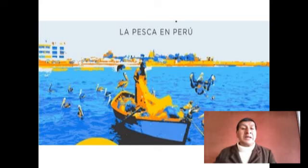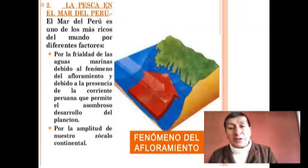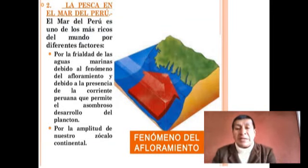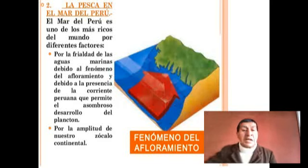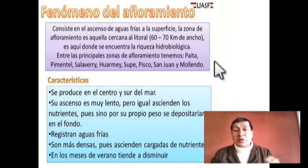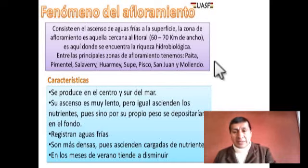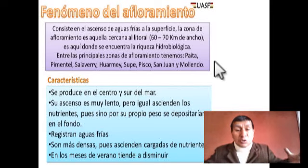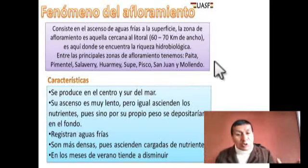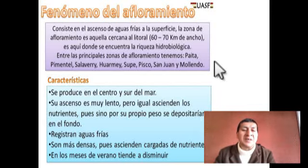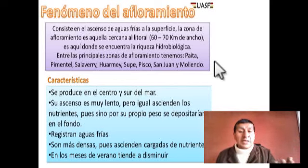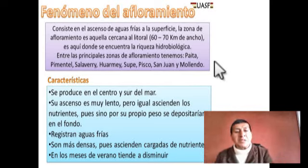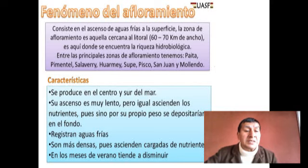Otra actividad es la pesca en el Perú. Nuestro mar peruano es uno de los más ricos del mundo por diferentes factores: la frialdad de sus aguas marinas, el afloramiento y porque estamos dentro de un zócalo continental. Esto permite que haya peces diversos y en abundancia. El afloramiento es aquella zona cercana al litoral donde se produce en el centro y sur del mar; su ascenso es muy lento pero igual asciende los nutrientes, y al ascender los nutrientes todos los peces van hacia donde están. En verano tiende a disminuirse, por eso hay zonas donde está prohibida la pesca en ciertas temporadas.